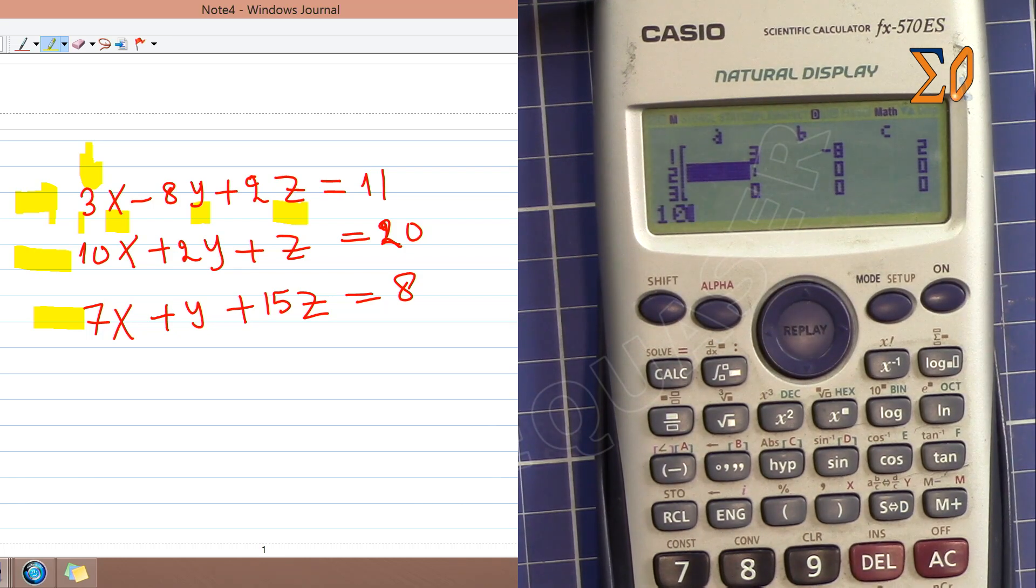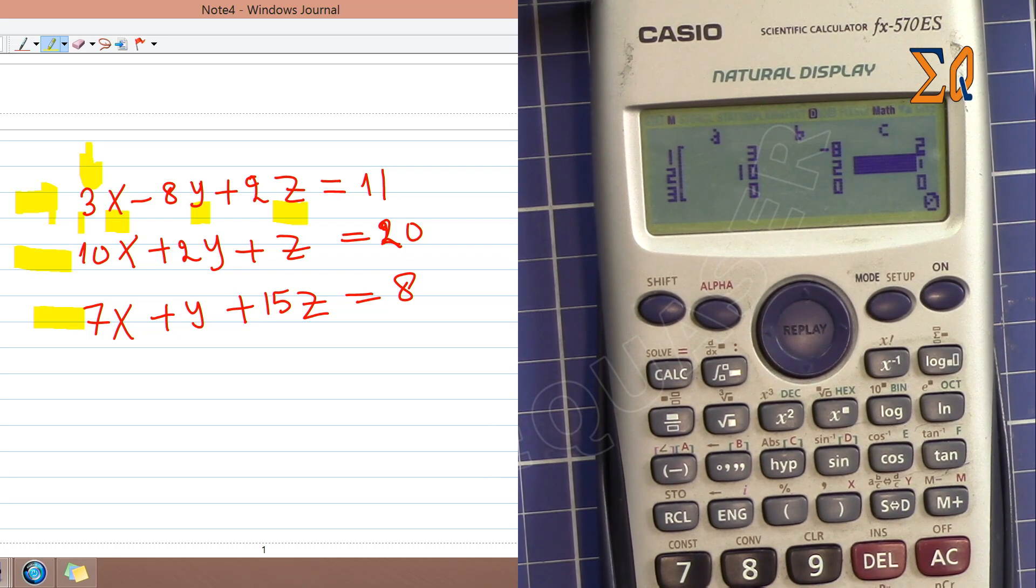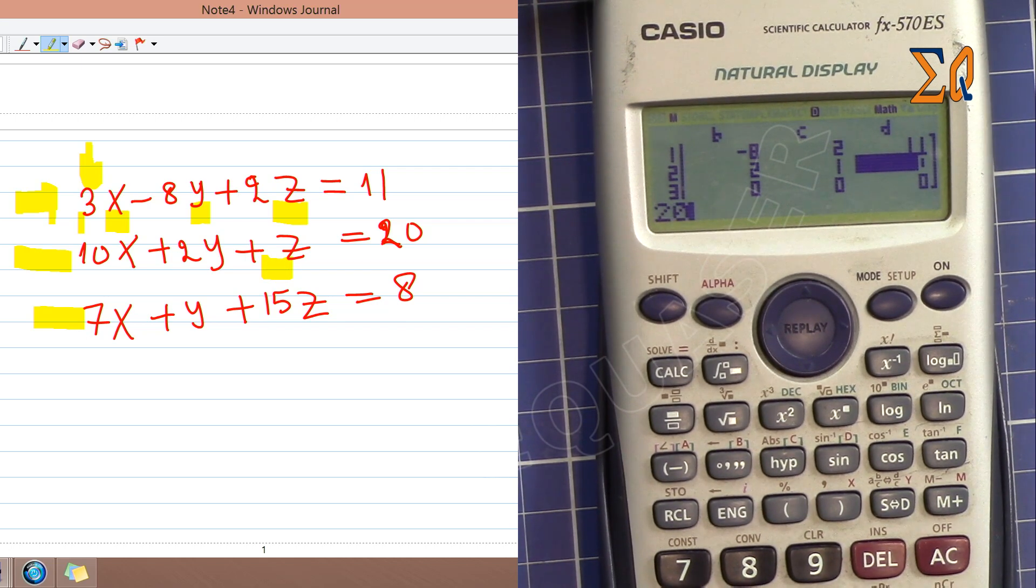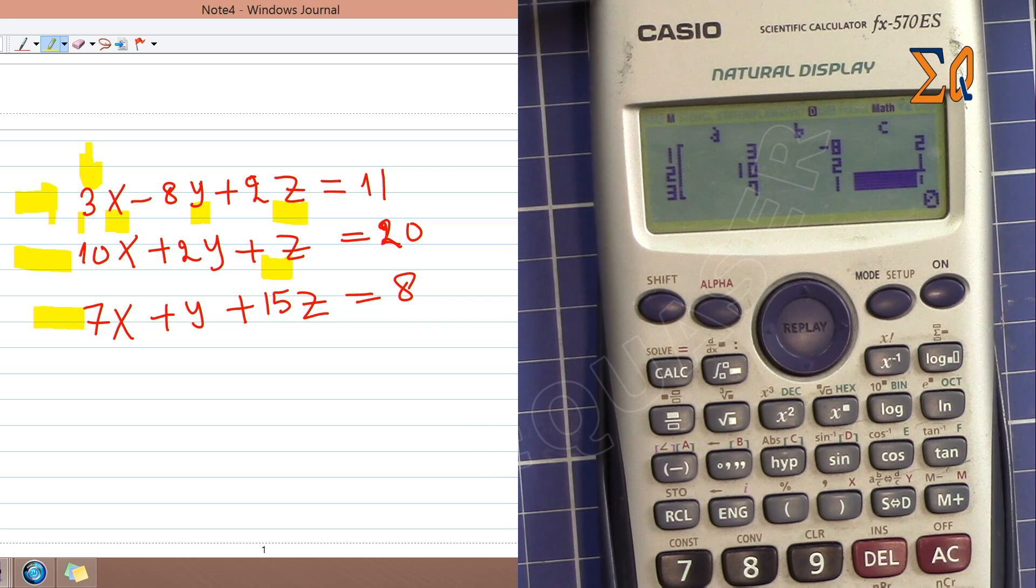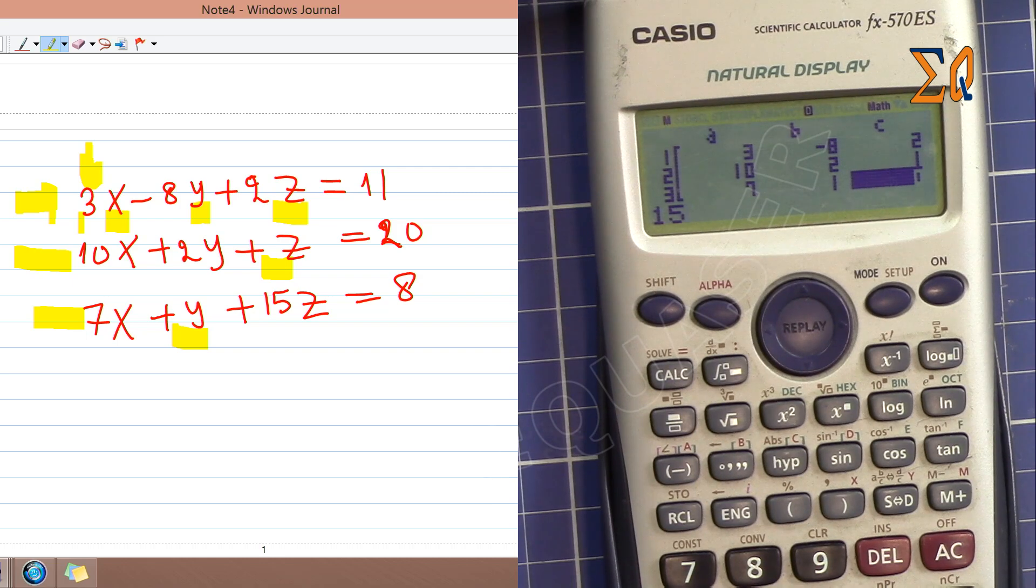For the second equation: 10, 2. For z here, the coefficient is 1, then 20 on this side. Equal sign again. Then 7 for the third equation, 1 for y. The coefficient for y is 1, then 15, equal sign, and then 8.